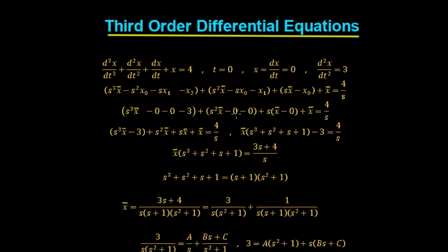Continuing the substitution: s²x̄ minus 0, minus 0, then sx̄ minus 0. Gathering all the like terms in x̄ gives us the equation: x̄(s³ + s² + s + 1) = (3s + 4)/s.